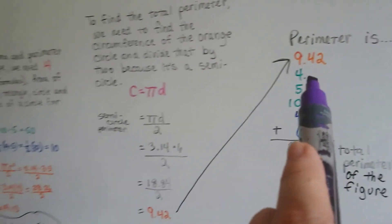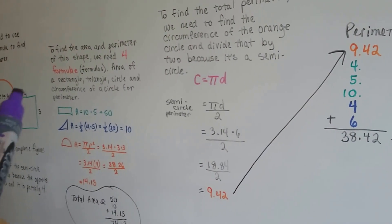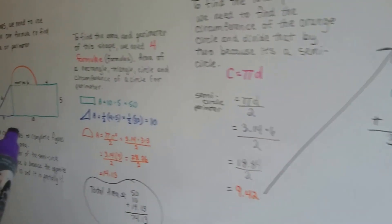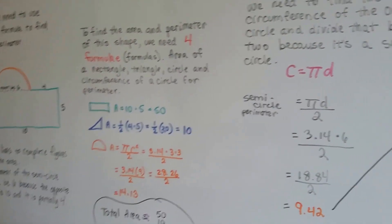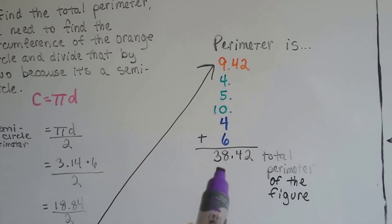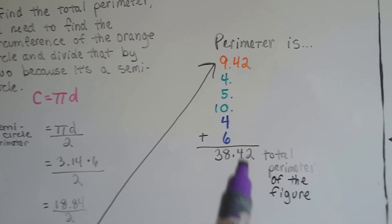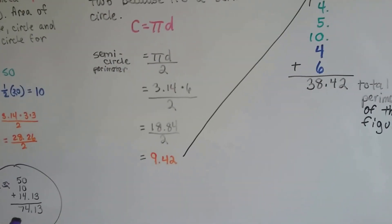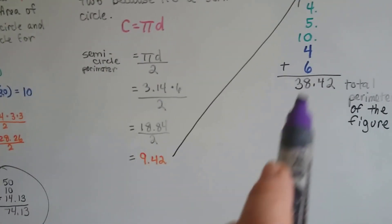We add the 9.42 and then we add the 4, the 5, the 6, the other 4, the other 6, and we total it all up and we get 38.42 for the total perimeter of the figure. So now we've got the total area 74.13 and the total perimeter 38.42.